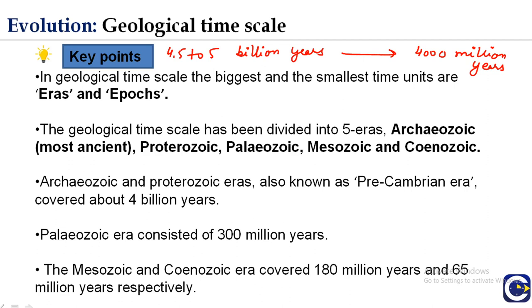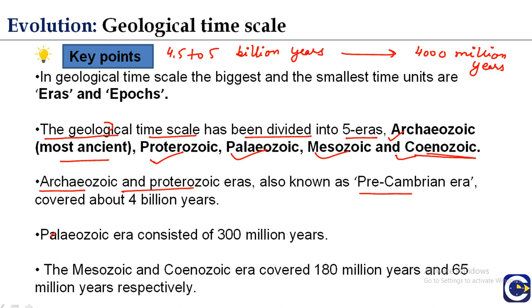The life history or duration of earth history has been divided into five principal geological time spans called eras. The geological time scale is divided into five eras: Archaeozoic (the most ancient/oldest one), Proterozoic, Paleozoic, Mesozoic, and Cenozoic (the most recent one). The Archaeozoic and Proterozoic eras are also known as the Pre-Cambrian era, covering about four billion years.